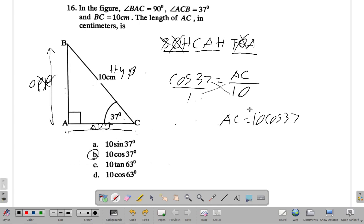I could also, in addition to cross multiplying, I could just say I multiply both sides by 10. 10 and 10 cancel and leave AC equals 10 times cos 37. The answer for question 16 is B.